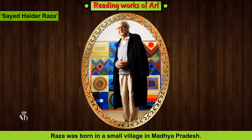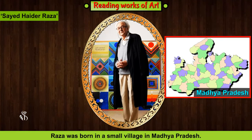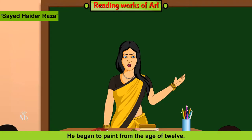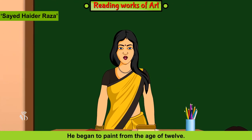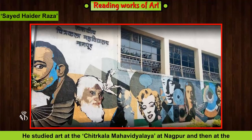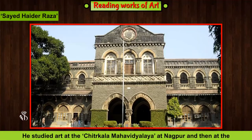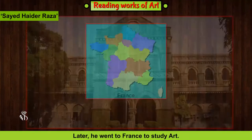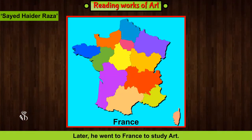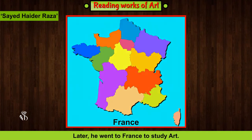Raza was born in a small village in Madhya Pradesh. He began to paint from the age of 12. He studied art at the Chitrakala Mahavidyalaya at Nagpur and then at the JJ School of Art in Mumbai. Later, he went to France to study art.